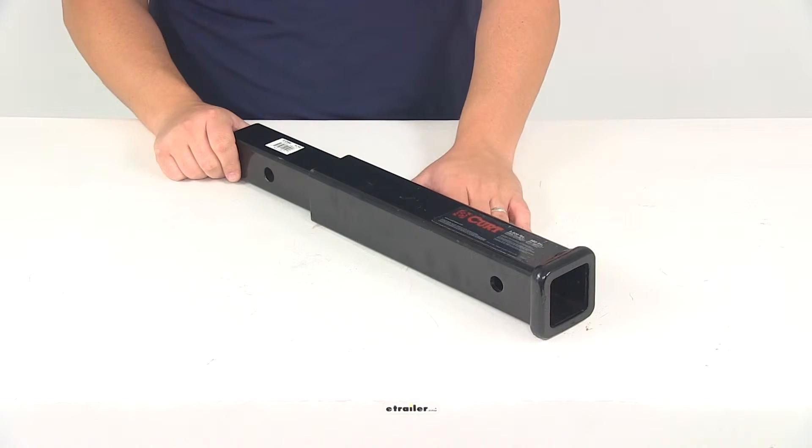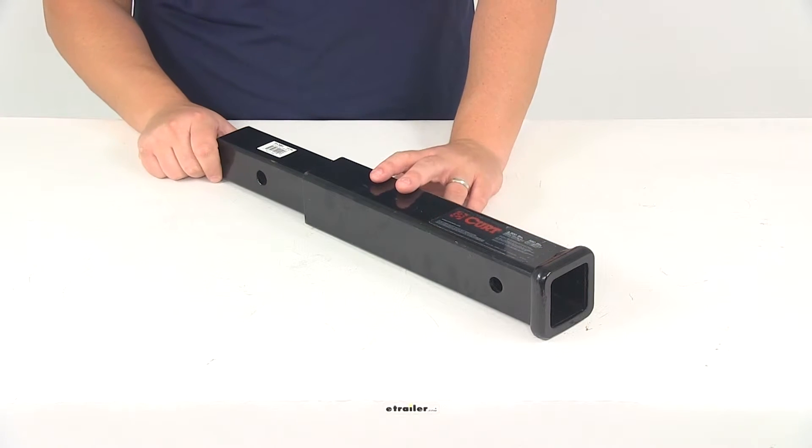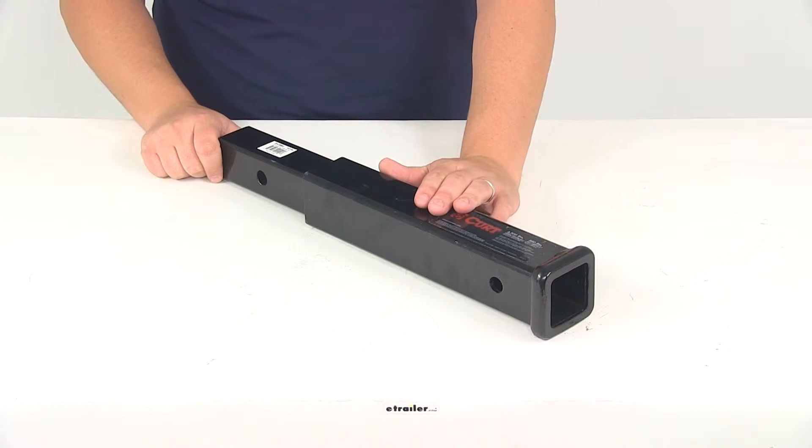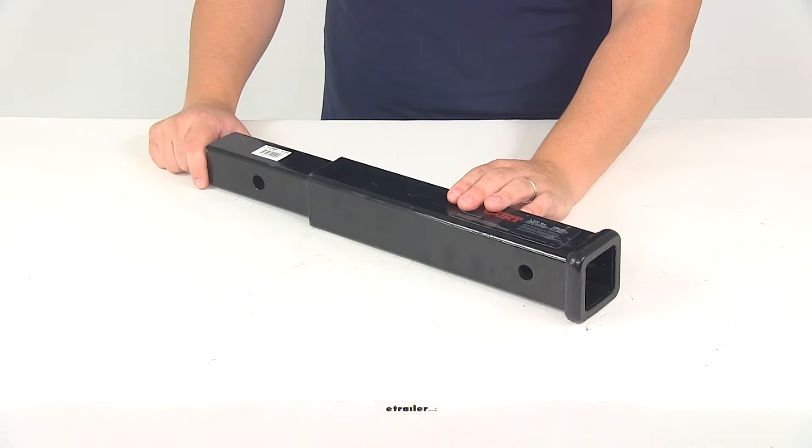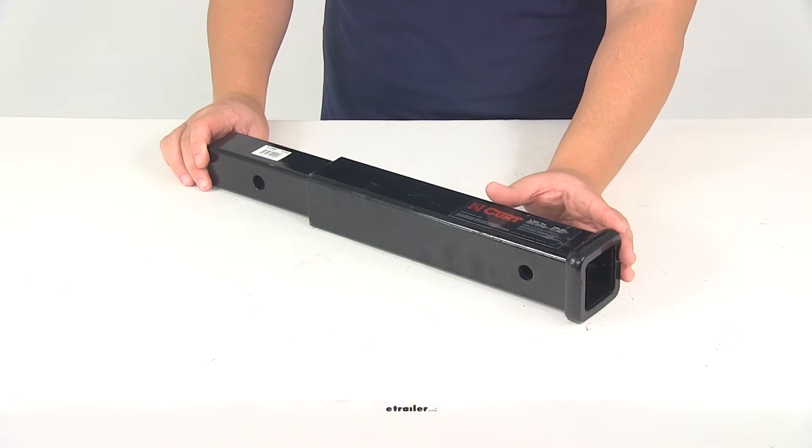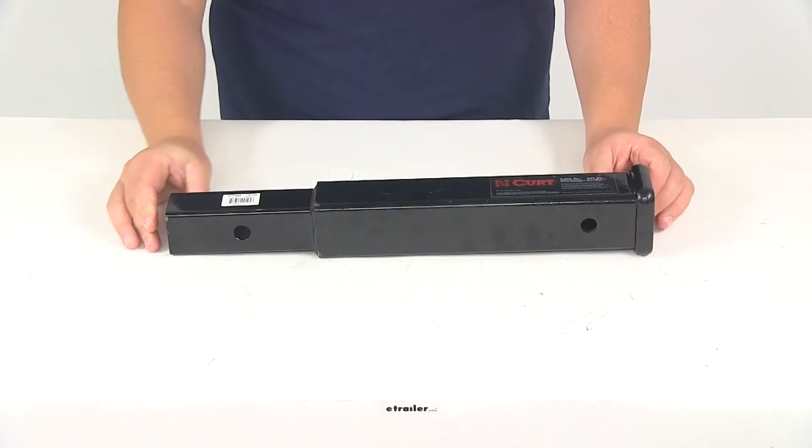Now with the unit we have a maximum gross trailer weight of 3,500 pounds, maximum tongue weight of 350 pounds. Please note that using an extension will reduce your hitch's weight capacity by 50%. We're going to go over a few measurements.